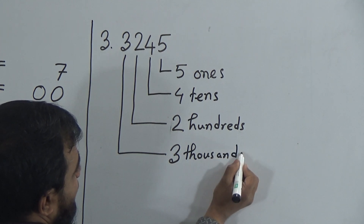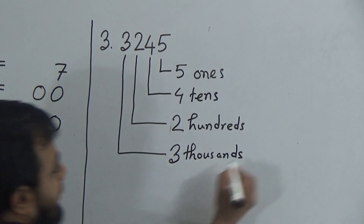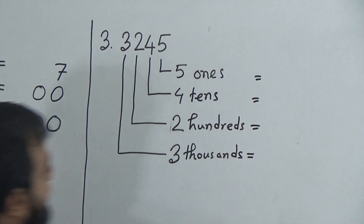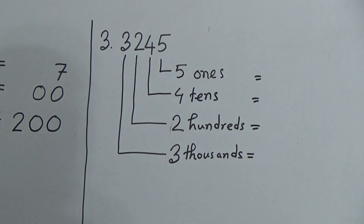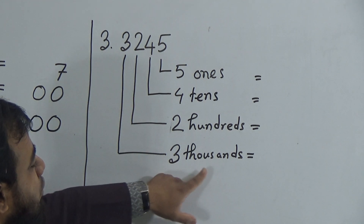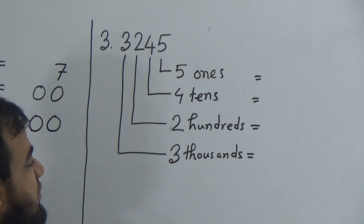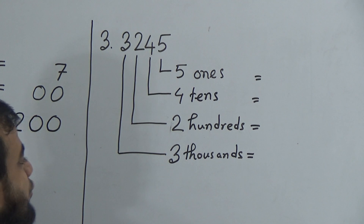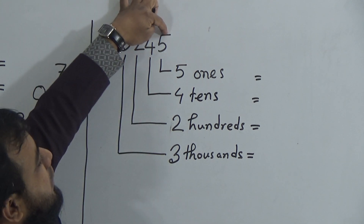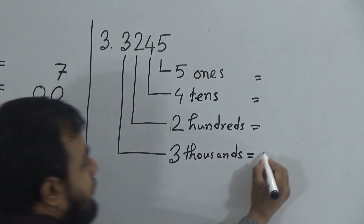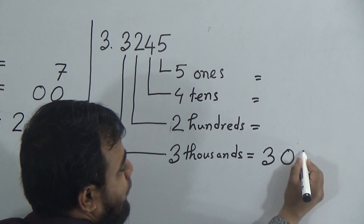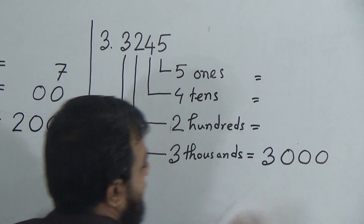Now, my dear students, we will write down the equal signs. We should fill up the number from the bottom. It is 3000 — to write 3000, after 3 we have 1, 2, 3 digits, so after 3 we write 3 zeros.